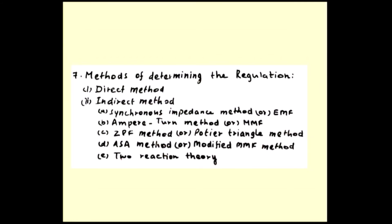Then methods to determine the regulation. One is the direct method and another one is indirect method. Direct method means actual load you have to directly connect with the alternator. This is accurate method, but this is not suitable for large rated alternator. Because if you assume 1000 ampere current rating alternator or 2000 ampere current rating alternator, you cannot provide such a huge loading arrangement.